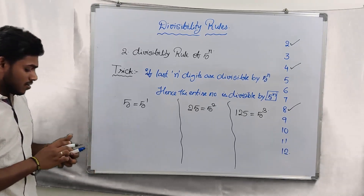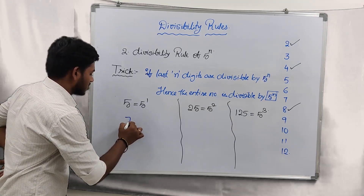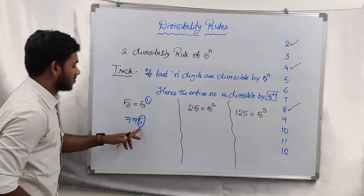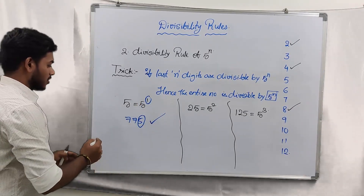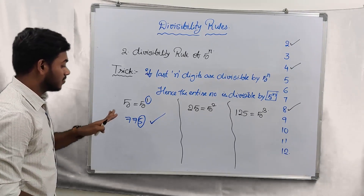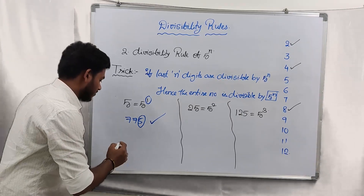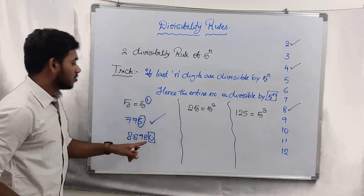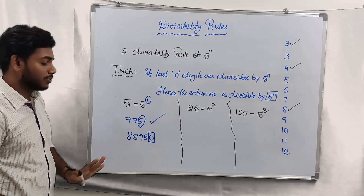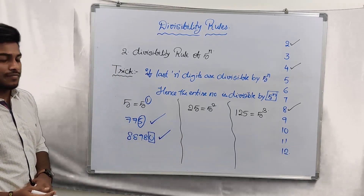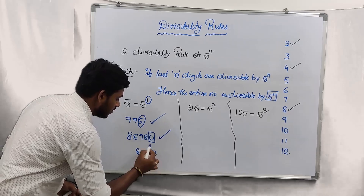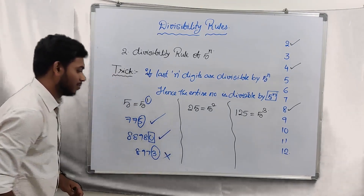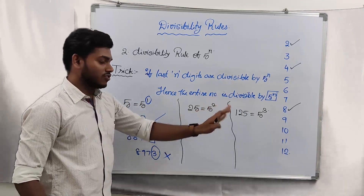Let's have a look at this example. If you consider 775, n value is 1, so consider only the last digit. The last digit is 5, and 5 is divisible by 5, so the entire number is divisible by 5. You can write whatever number you want on the left side — it doesn't matter, the number is going to be divisible by 5 for sure. If the last digit is 0, that is also divisible by 5, hence the entire number is divisible by 5. But for a number like 8973, the last digit is 3, which is not divisible by 5, hence that number is not divisible by 5. This rule can also be applicable for 25 and 125 as well.